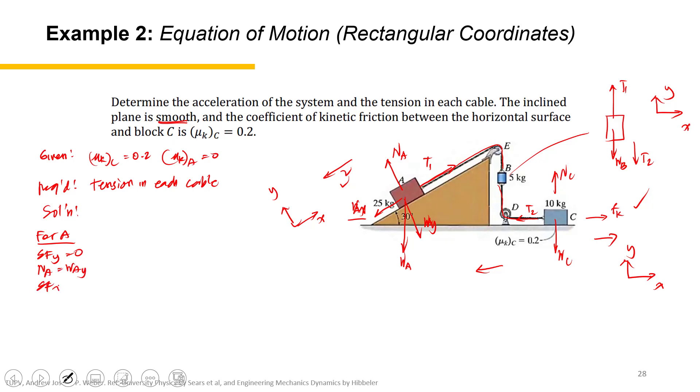Next, the summation of forces along X is not equal to 0, but M_A a_x. The acceleration of block A in the X direction. So that would be W_Ax minus T1 equals M_A a_x.